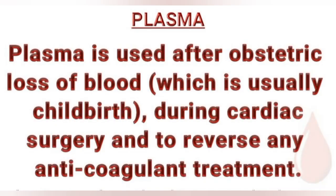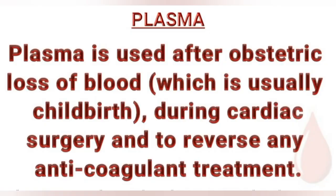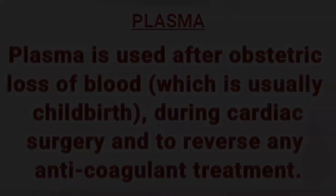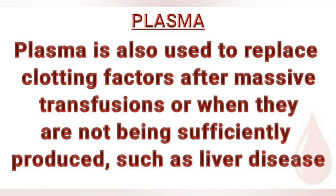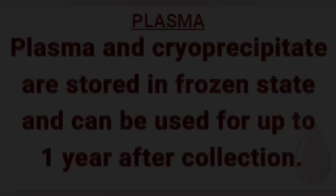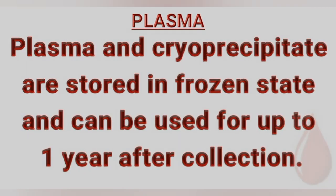Plasma is used after obstetric loss of blood, which is usually during childbirth, during cardiac surgery, and to reverse anticoagulant treatment. It is also used to replace clotting factors after massive transfusions or when they are not being sufficiently produced, such as in liver disease. Plasma and cryoprecipitate are stored in a frozen state and can be used for up to one year after collection.